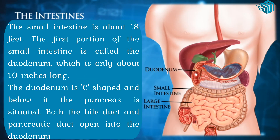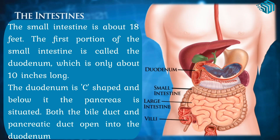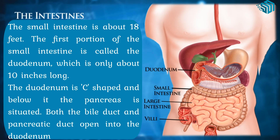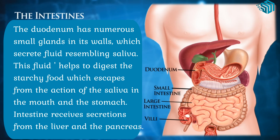The small intestine is about 18 feet long. The first portion of the small intestine is called the duodenum, which is only about 10 inches long. The duodenum is C-shaped, and below it the pancreas is situated. Both the bile duct and the pancreatic duct open into the duodenum. The duodenum has numerous small glands in its walls which secrete fluid resembling saliva. This fluid helps to digest starchy food which escapes the action of saliva in the mouth and stomach.